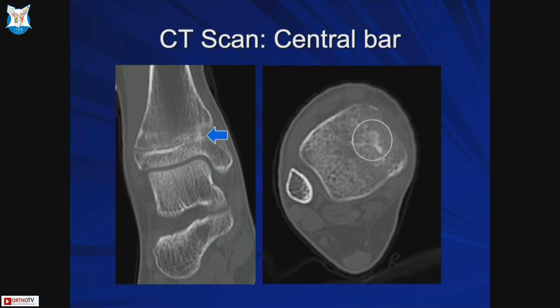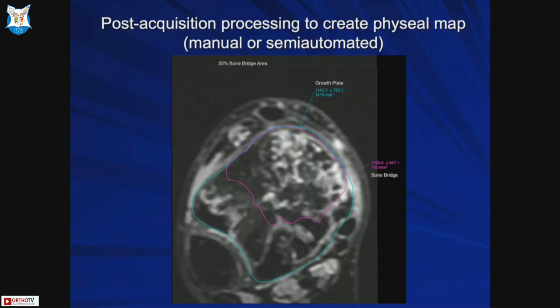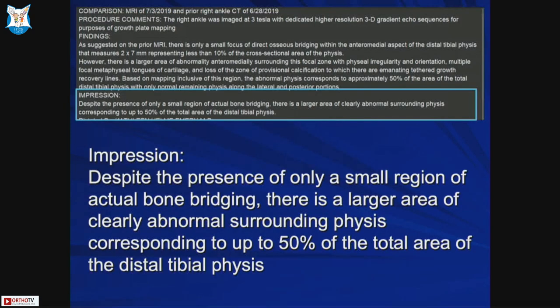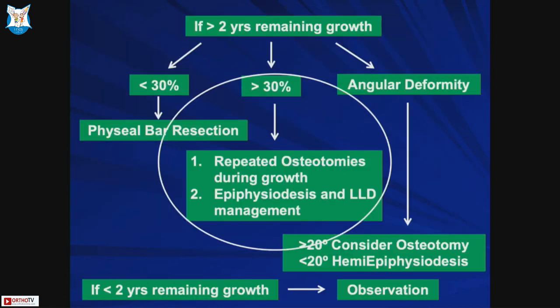There is angulation at the ankle. CT scan showed both a peripheral bar and a central bar. When you have two bars, it is difficult to excise both. The fat-suppressed MRI image was used to map the physeal bar, and the physeal map showed 50% bone bridge - which is too much for resection. Therefore, we did not attempt resection in this case.